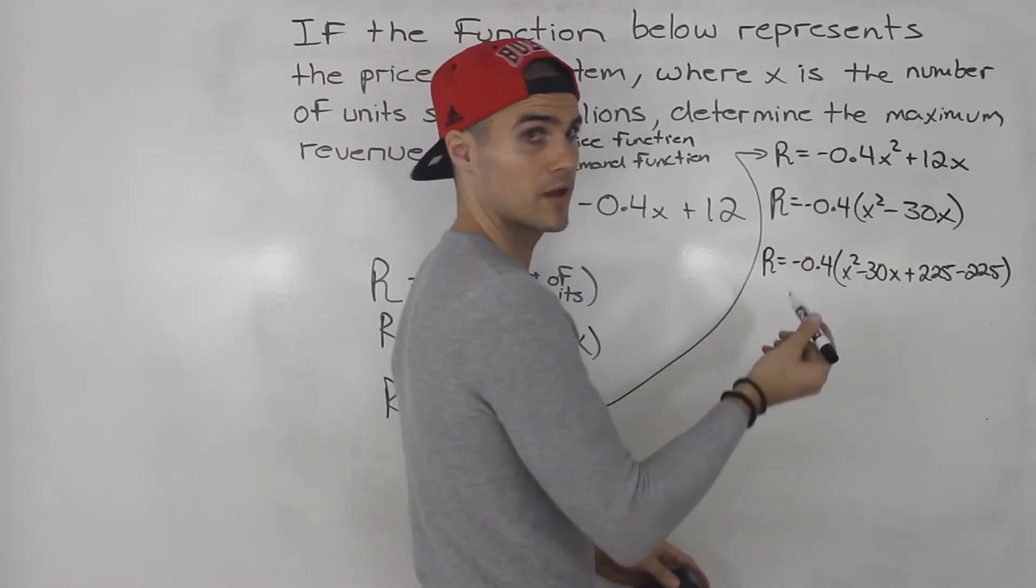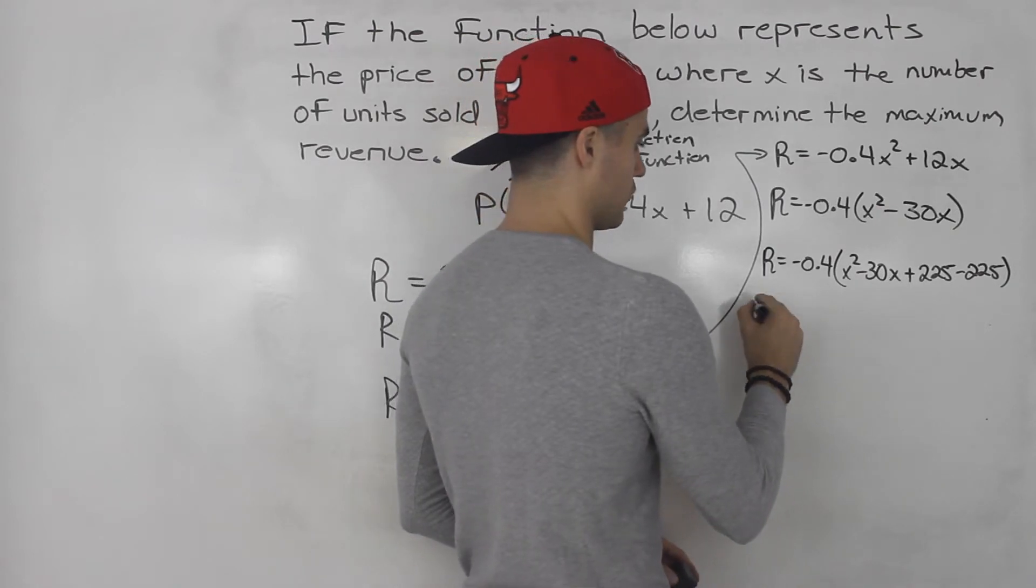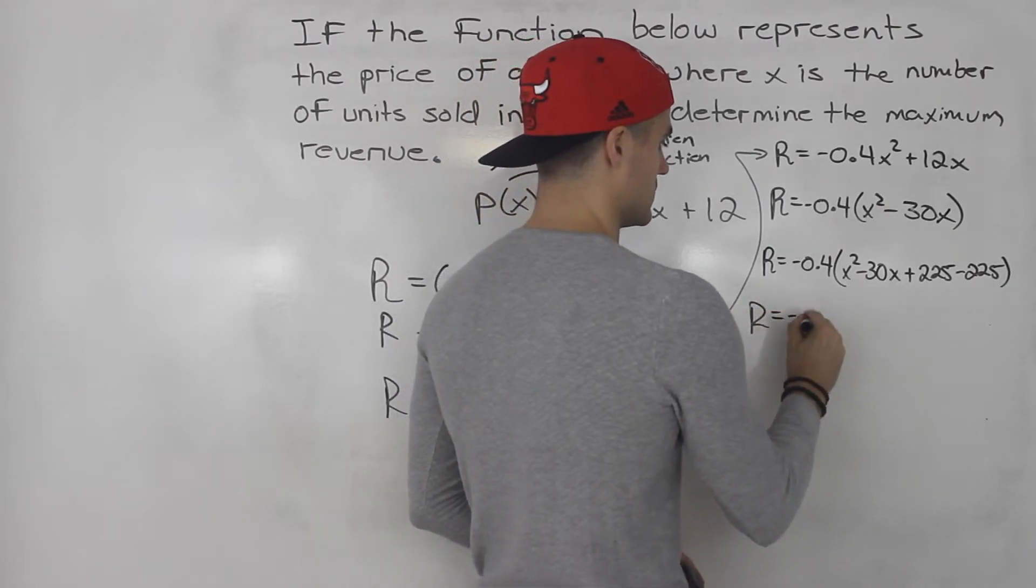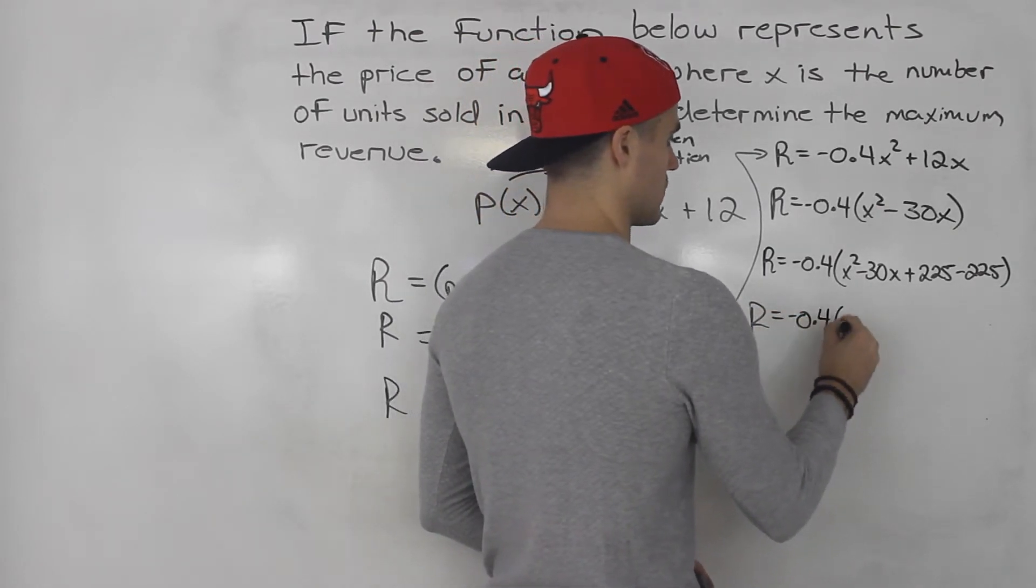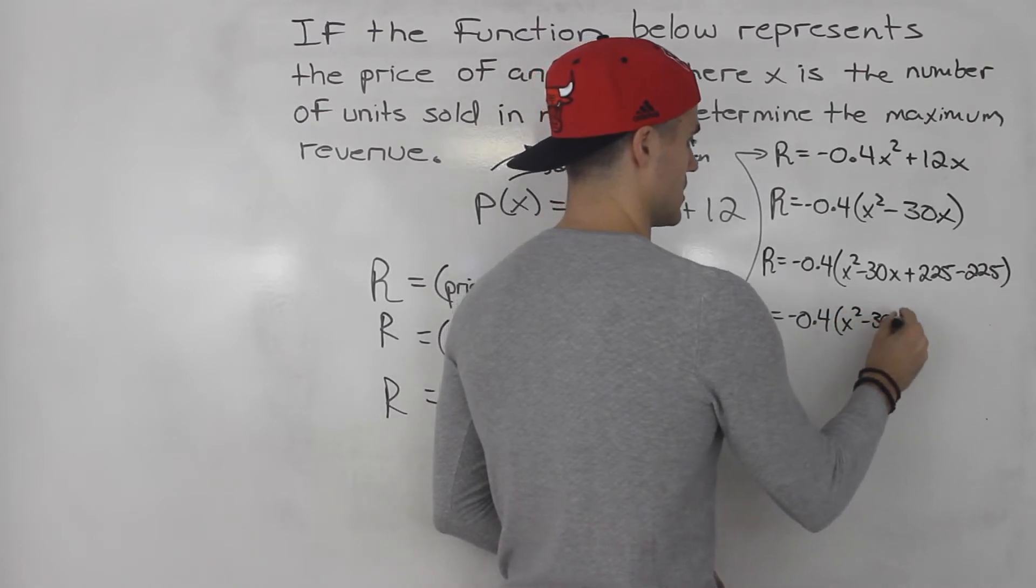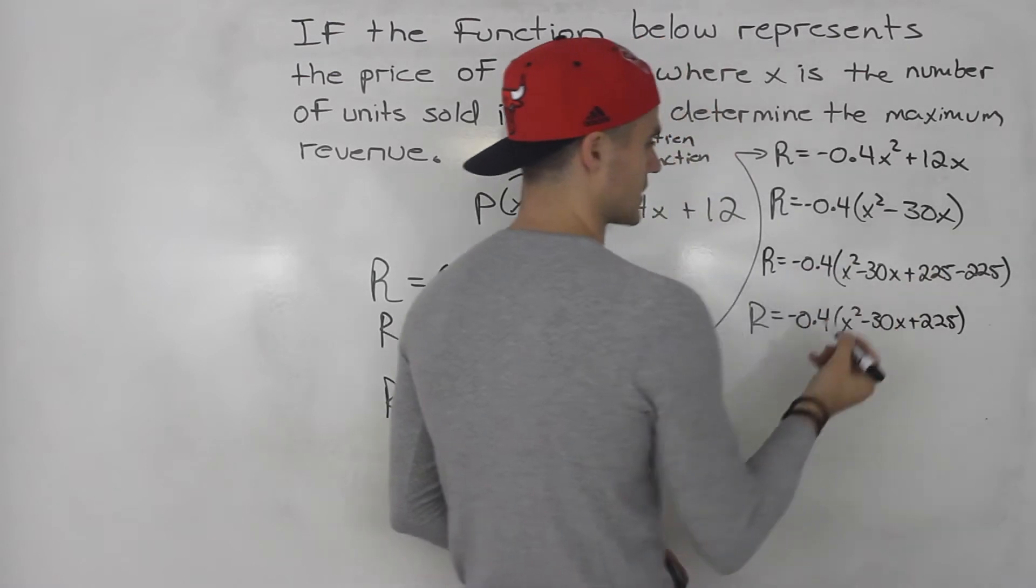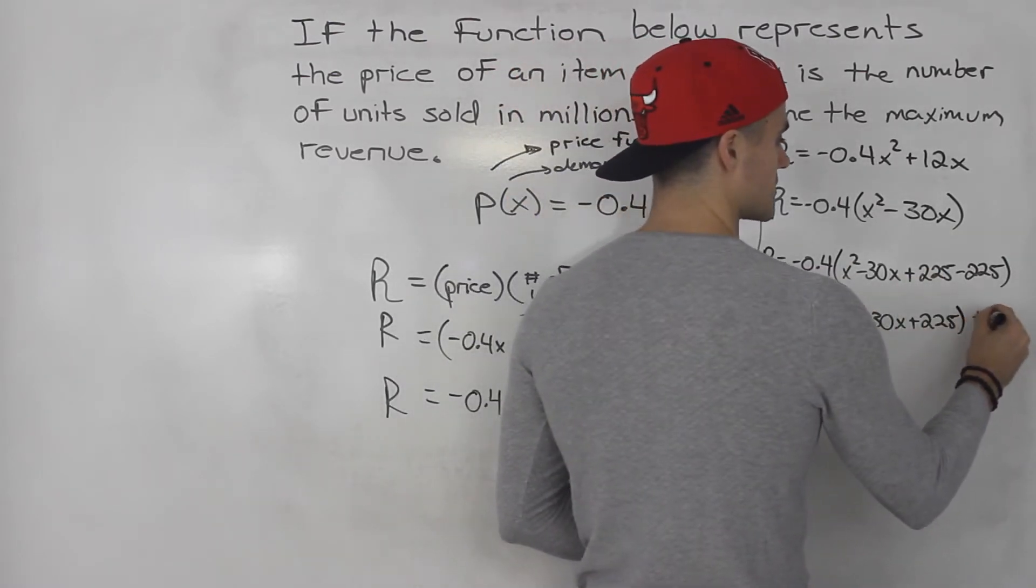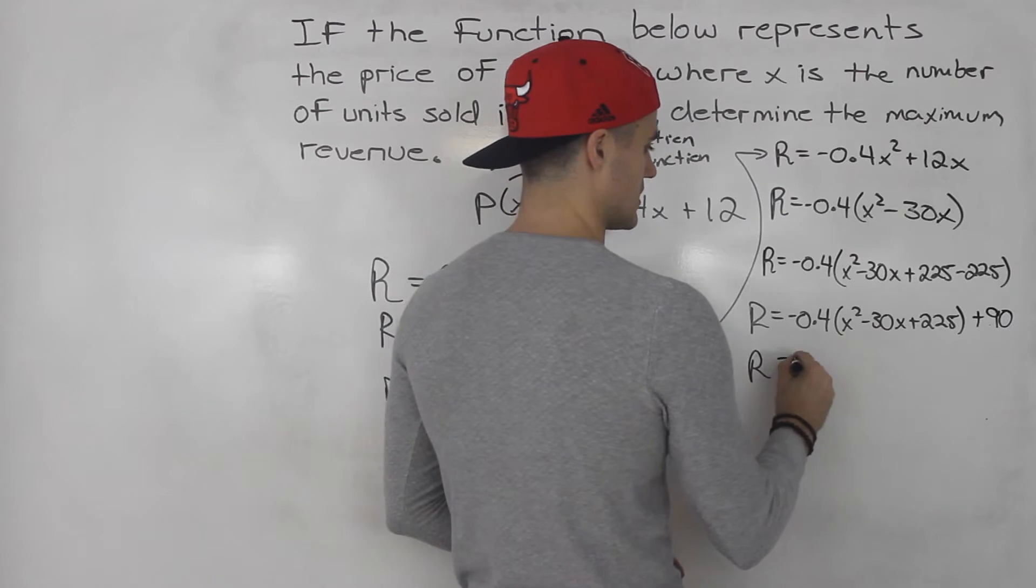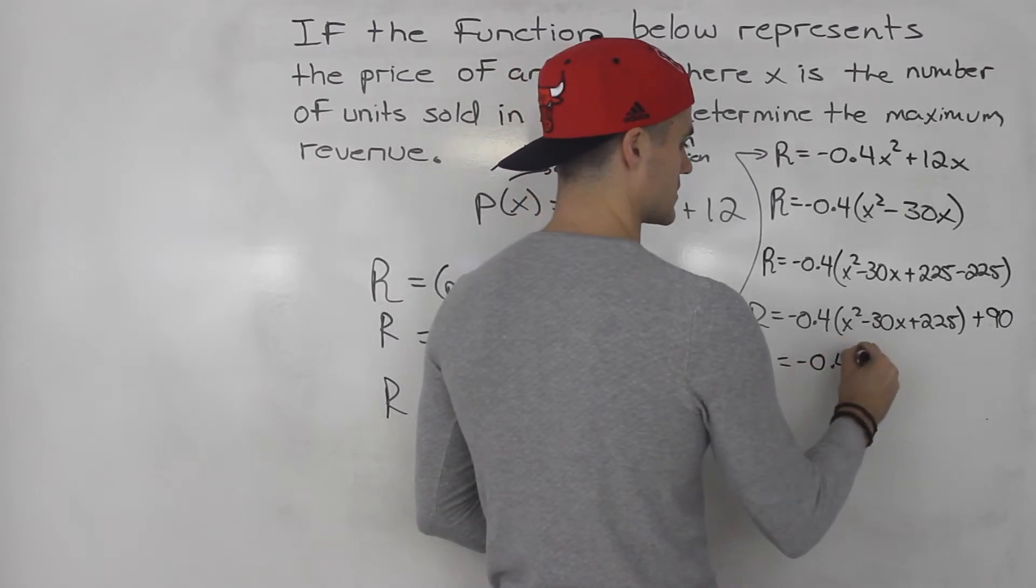So we'd have R equals negative 0.4 times x squared minus 30x plus 225, and then continuing on we take out the negative 225 from the bracket multiplied by negative 0.4 outside. So we'd have negative 0.4 times x squared minus 30x plus 225. Negative 225 times negative 0.4 gives us positive 90.